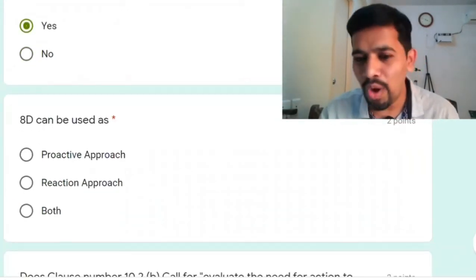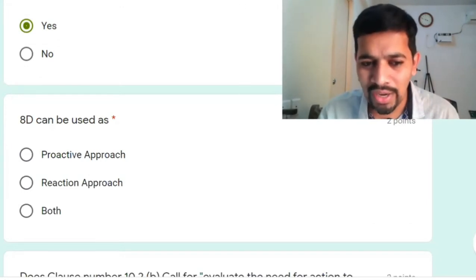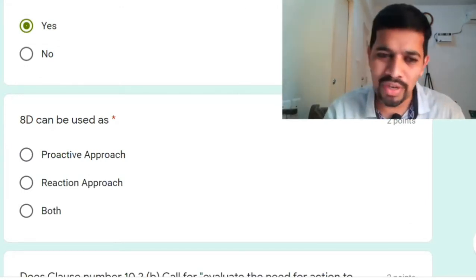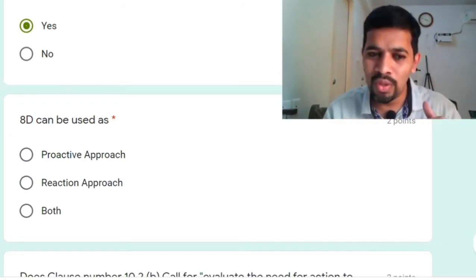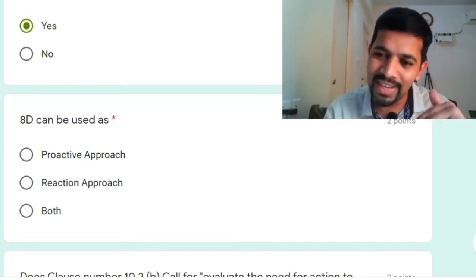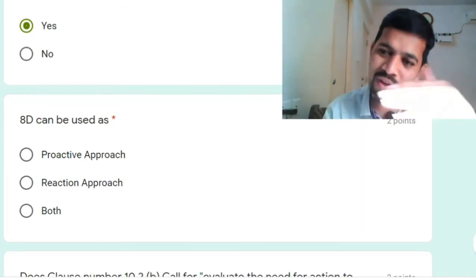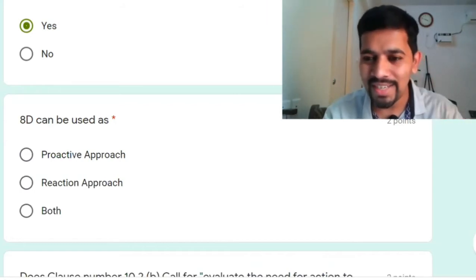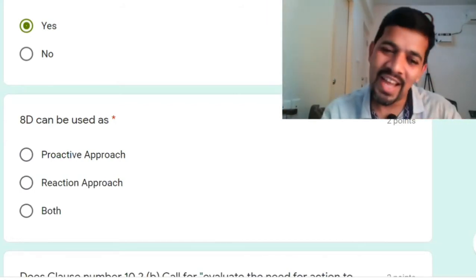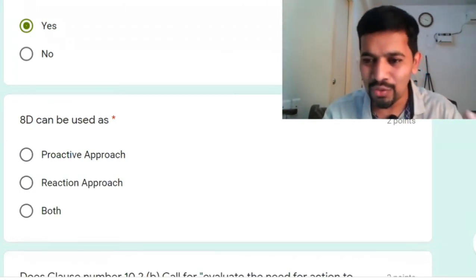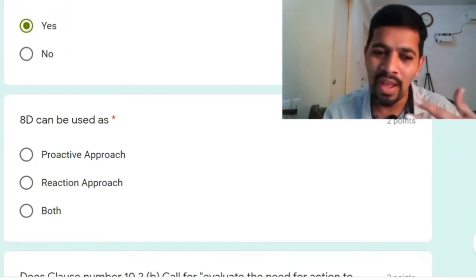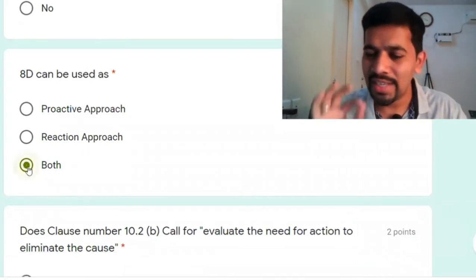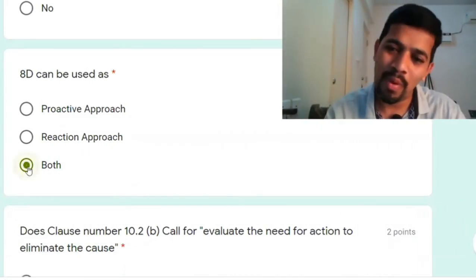8D can be used as a proactive approach, a reactive approach, or both. Proactively, you can use 8D before doing an FMEA to address risks and mitigate them. Reactively, whenever there is a failure situation, you can fix it through 8D as well. 8D problem solving technique is the number one tool for problem solving.